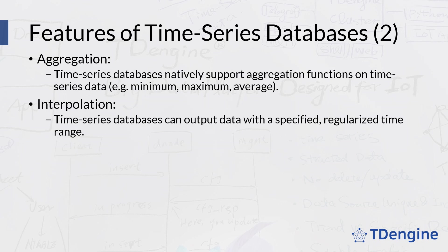Aggregation functions are a necessity for time series databases. You need to be able to do operations like sums and averages to make any sense of your time series data. And finally, interpolation, which essentially means regularizing data so that data points exist for all parts of a time range. You may need to use interpolation if your algorithm requires all datasets to have values at the same times, for example.